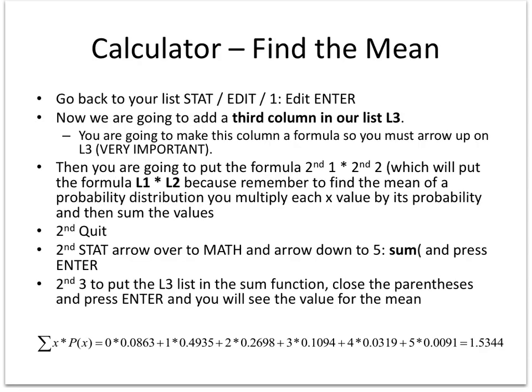If I want to find the mean, I already have in column 1 the x values. In column 2, the probability values. If you remember by our formula, we want to multiply these, so I can add a column 3, which says to multiply what's in L1 times what's in L2. And then I'm going to add them all up.